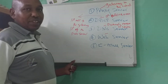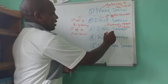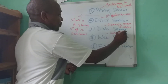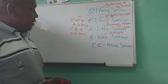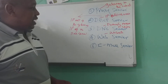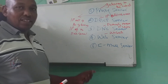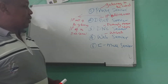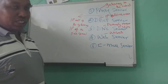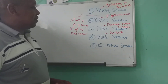The next server required is the web server, which is a computer that hosts the organizational website. This is an important server because it allows people both in the local area network and in the wide area network to access the organization's website.